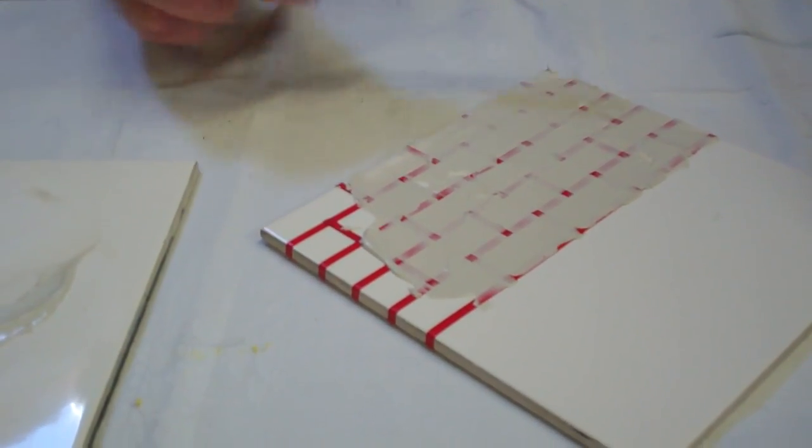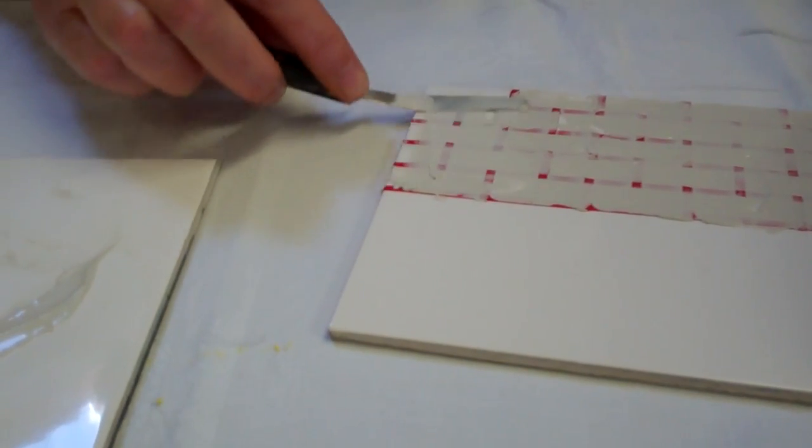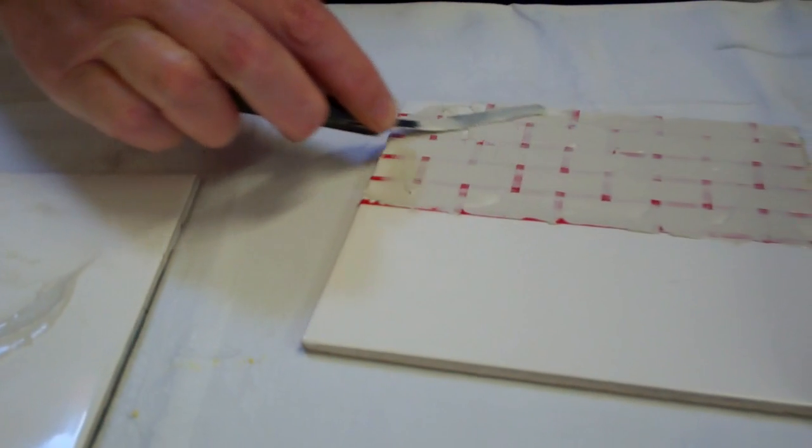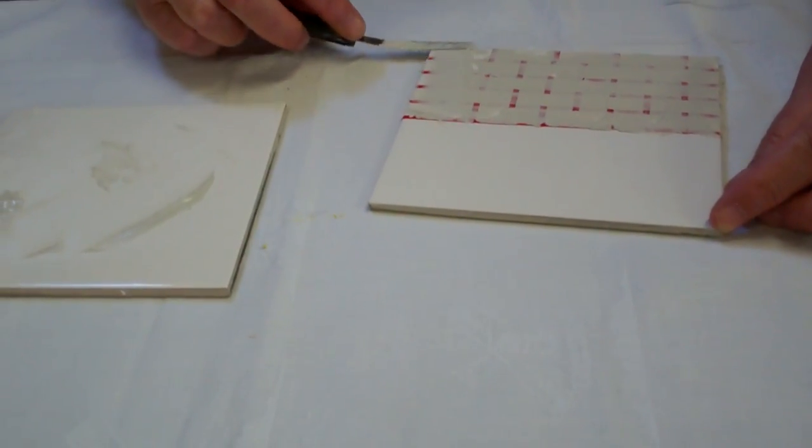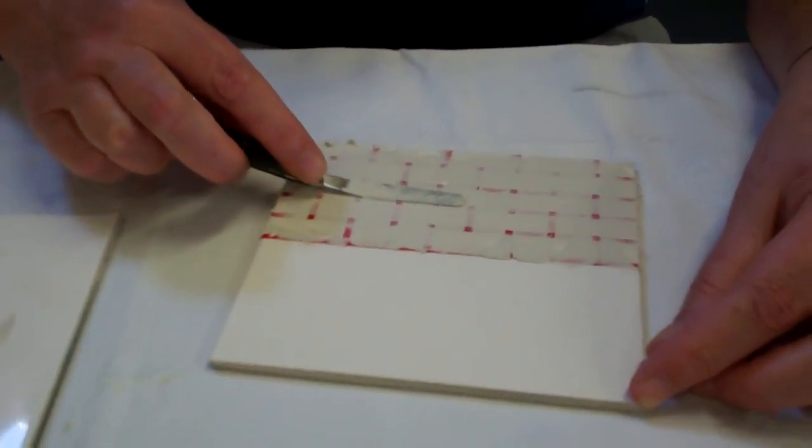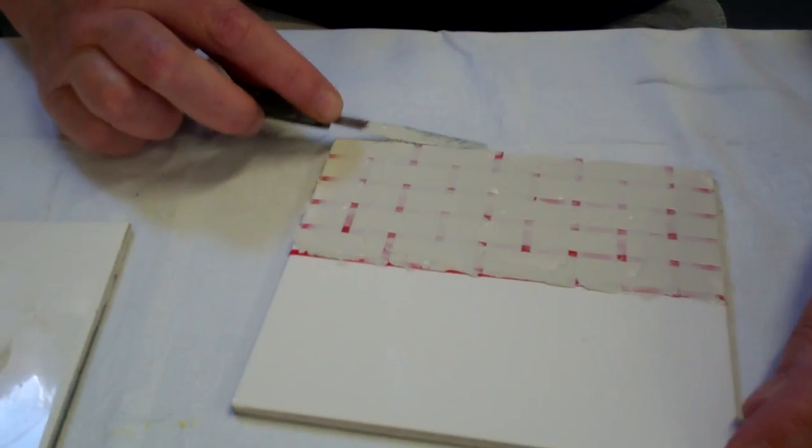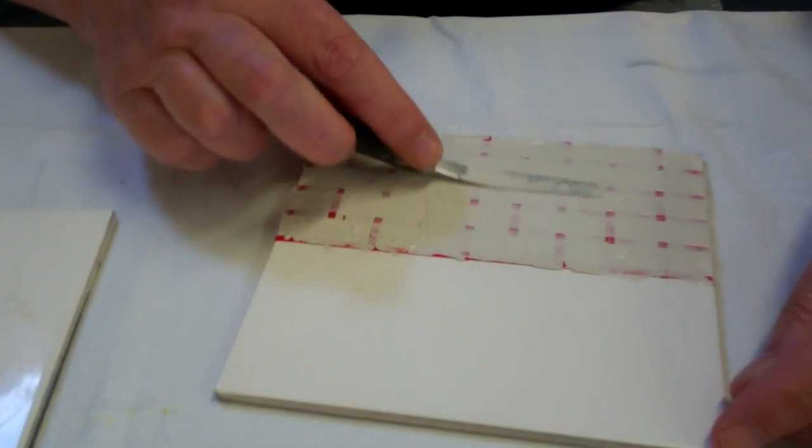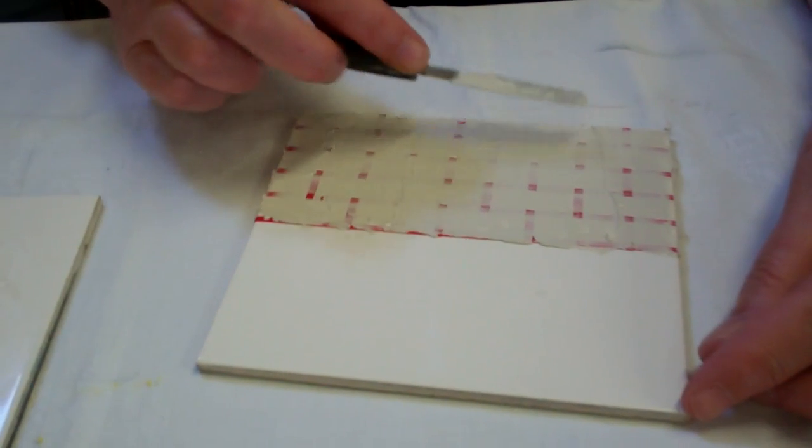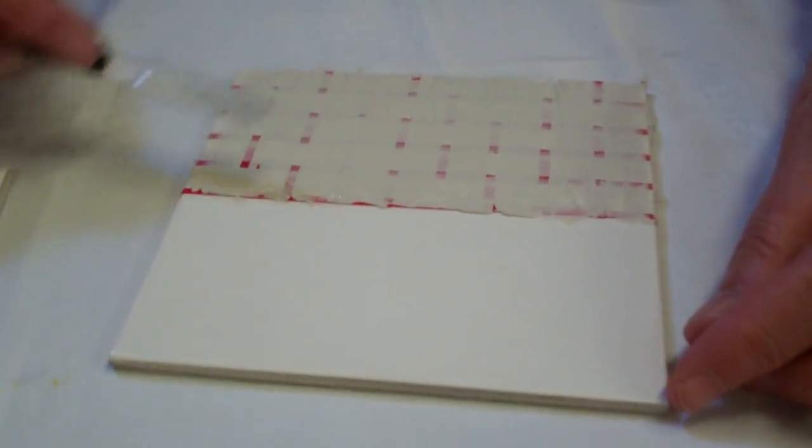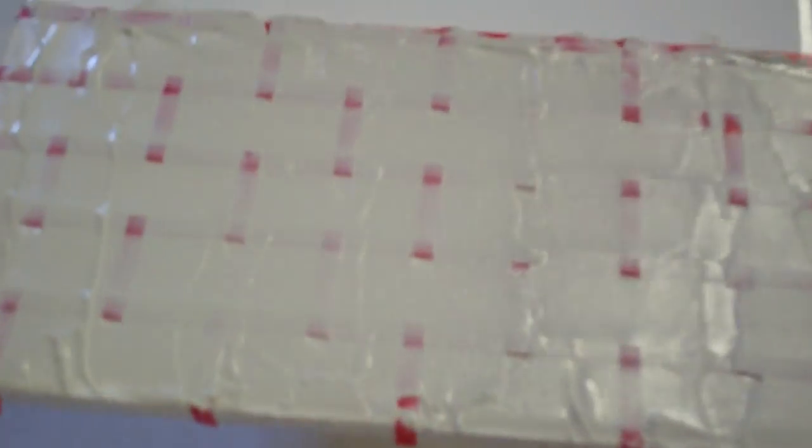You can see I'm not being too careful. It's quite good to use a rubber kidney for this, but I've lost mine, so I'm just using my knife. What I like to do is go down and create a slightly uneven texture.